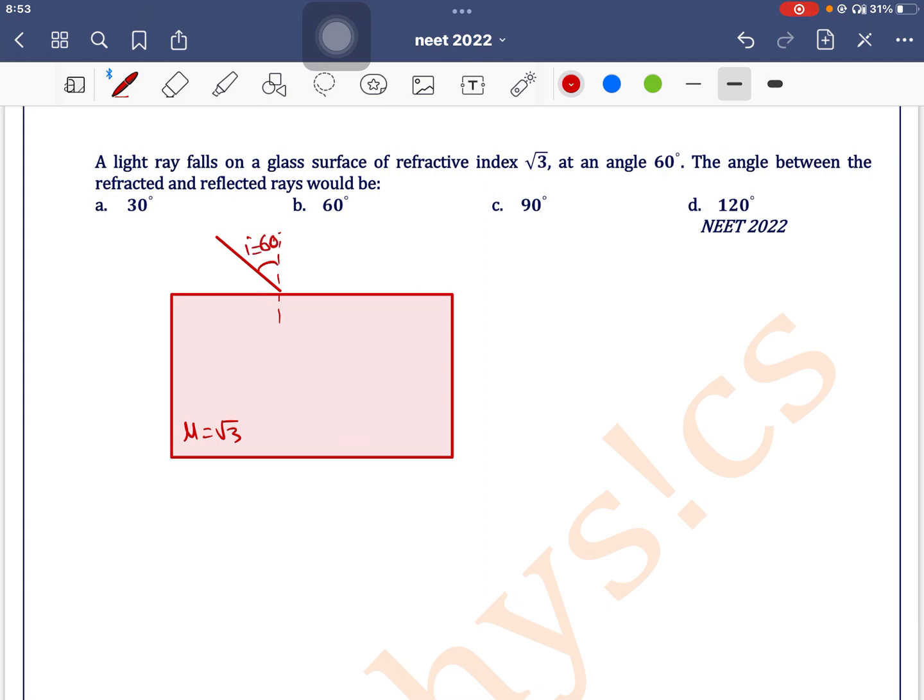The question asks for the angle between the refracted and reflected rays. The reflected ray looks like this, and the angle of reflection equals 60 degrees. Now what is the angle of refraction?